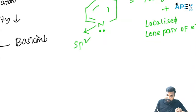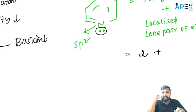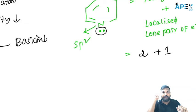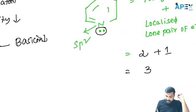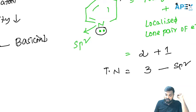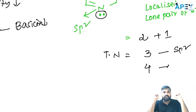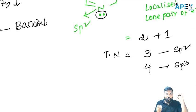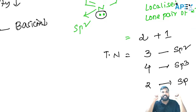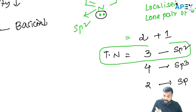For pyridine: there are two sigma bonds on nitrogen, plus one localized lone pair — that's 2 + 1 = 3. Whenever the total is 3, that indicates sp2 hybridization. If the total is 4, it is sp3 hybridization. If the total is 2, it is sp hybridization. Here we get 3, so the hybridization is sp2.